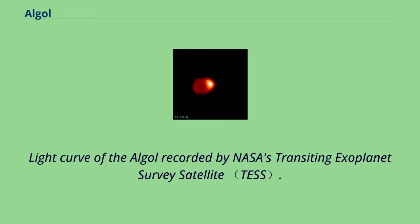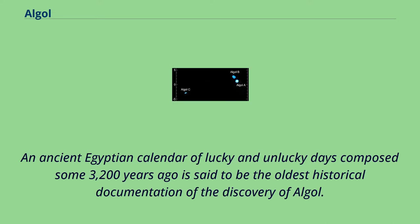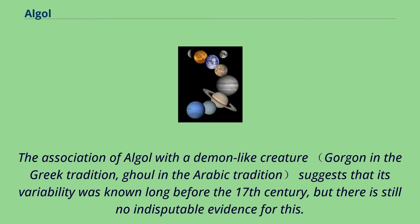Light curve of Algol recorded by NASA's Transiting Exoplanet Survey Satellite. An ancient Egyptian calendar of lucky and unlucky days composed some 3,200 years ago is said to be the oldest historical documentation of the discovery of Algol. The association of Algol with a demon-like creature suggests that its variability was known long before the 17th century, but there is still no indisputable evidence for this.